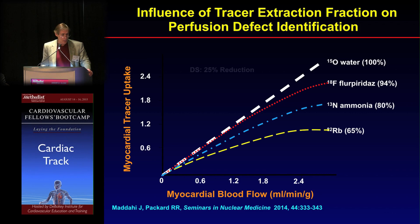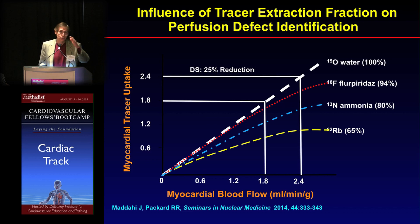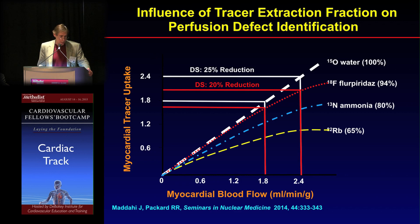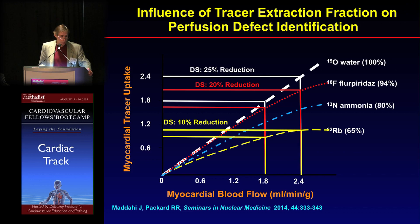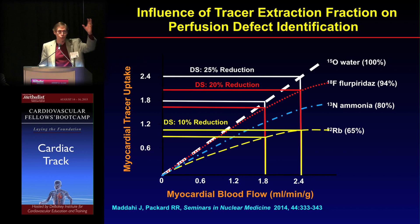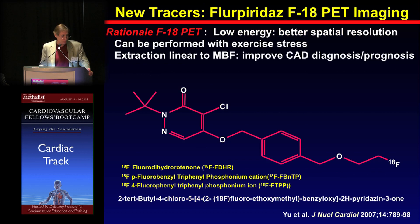If you're looking for a 25% reduction in flow in normal areas compared to abnormal areas, you can see this very nicely with O-15 water — flow of 2.4 in normal regions versus 1.8 in abnormal regions. With fluorpiridaz, which has a 94% extraction fraction, instead of seeing a 25% reduction in counts, it would only be 20%. And with rubidium, which has an even worse extraction fraction, at 2.4 mL/min/g blood flow you would only see a 10% difference in counts. This rollover causes homogeneity within images where you're trying to look at heterogeneity in flow between abnormal and normal regions.